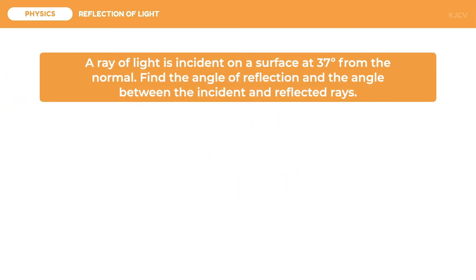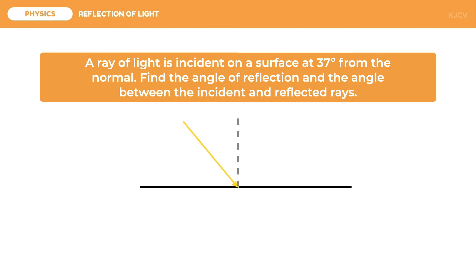For the first problem, a ray of light is incident on a surface at 37 degrees. Find the angle of reflection and the angle between the incident and reflected rays. It is highly recommended that we draw the problem first so that we can see if we have identified the given quantities correctly. So we draw the reflective surface and the normal line which is perpendicular to it, and then draw the two rays.